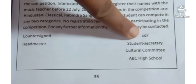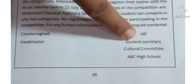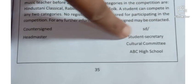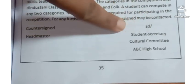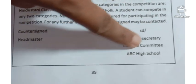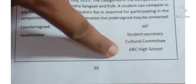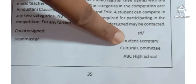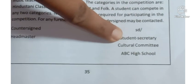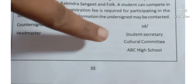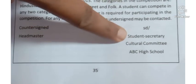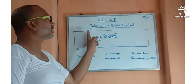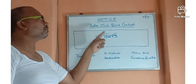Then, the student — the name is the 100th. This is the Cultural Committee, ABCD High School. The secretary is the 100th. So, like I said, look at that — the students are the same.